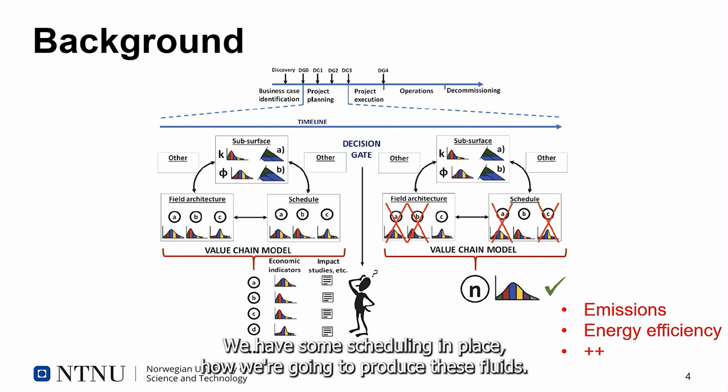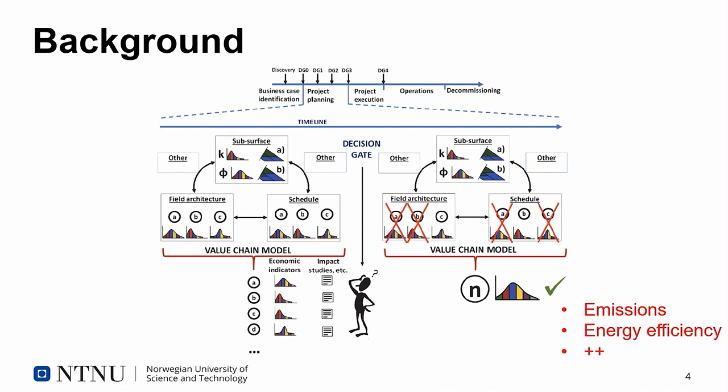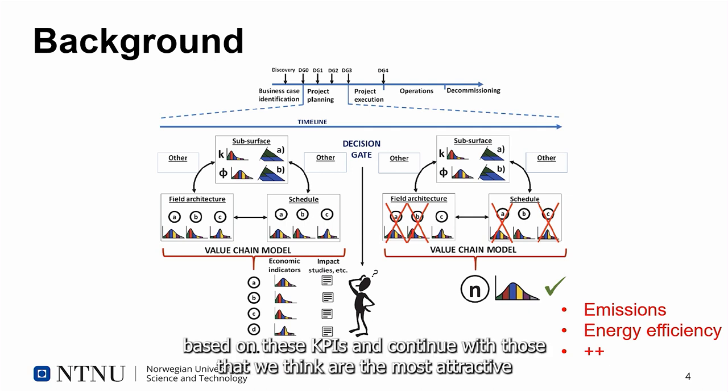We have some ways that we can use to develop the field, some scheduling in place for how we're going to produce these fluids. Based on that we calculate some economic indicators and impact studies, and then we have to decide and cut some of the options that we think are less attractive and continue with those that we think are the most attractive.